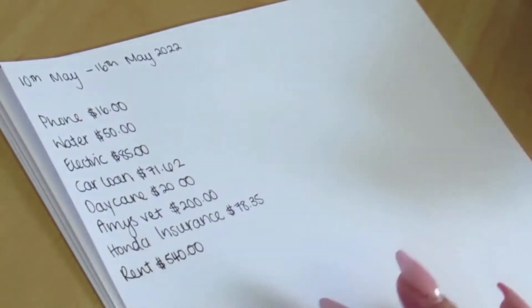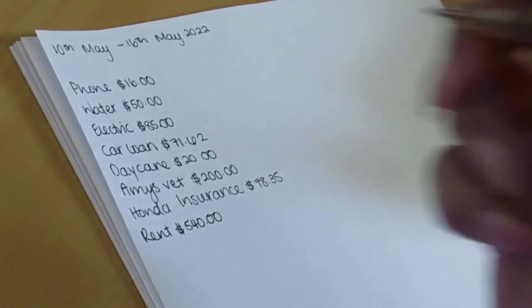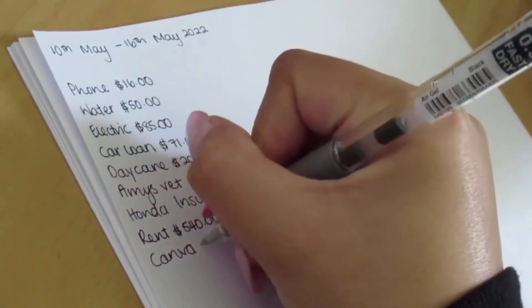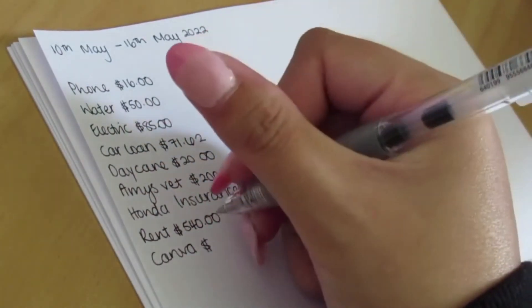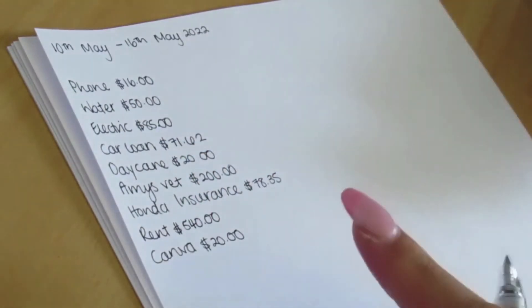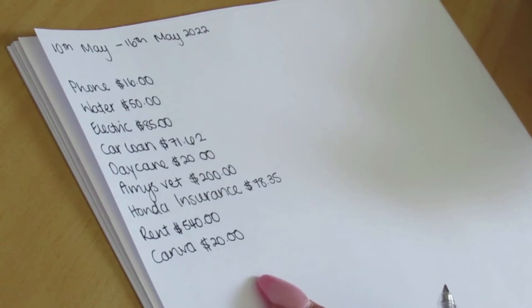Lastly we have rent. Rent is going to be $540. I also want to add on top of that Canva.